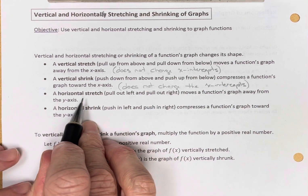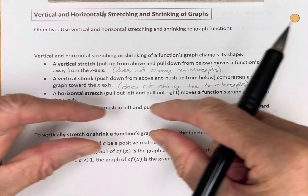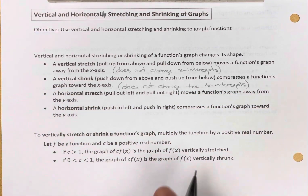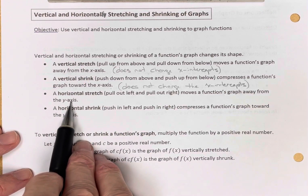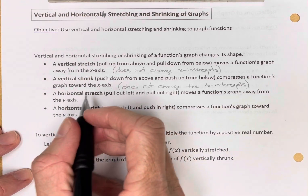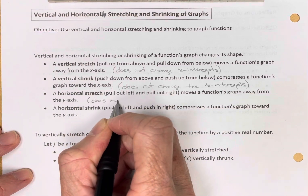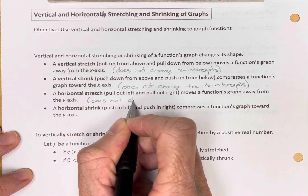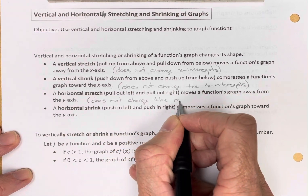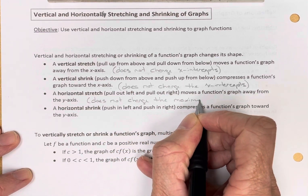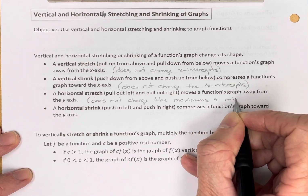A horizontal stretch means we're going to pull the graph out to the left and to the right — moving the function's graph away from the y-axis. In these cases it does not change the maximums and minimums.